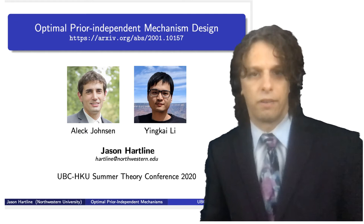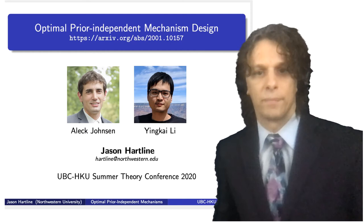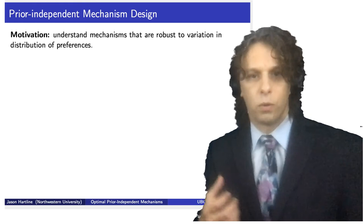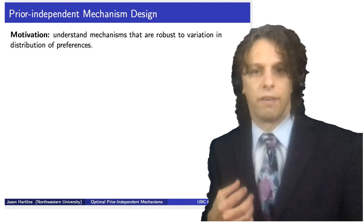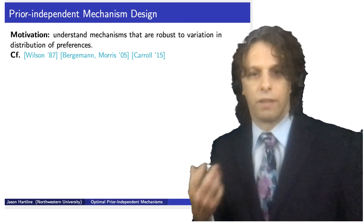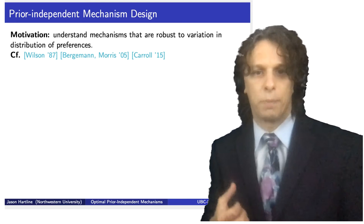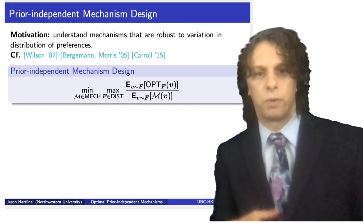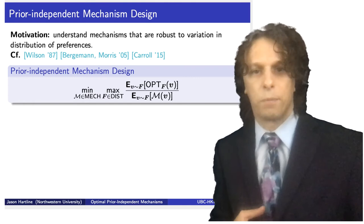Today I'm going to be talking about optimal prior independent mechanism design. The goal of prior independent mechanism design is to understand mechanisms that are robust to variation in the distribution of preferences. Robustness is a key concern in economics, and I'm going to be focusing on this particular formulation of the robustness question, which is based on the following optimization problem.